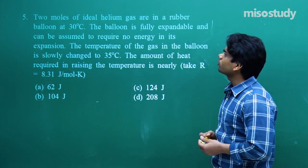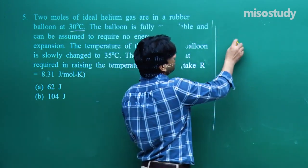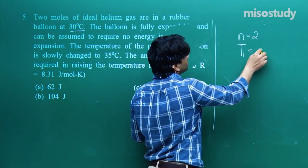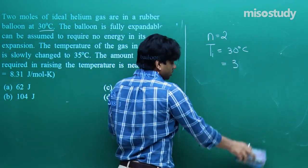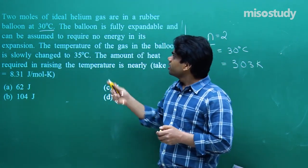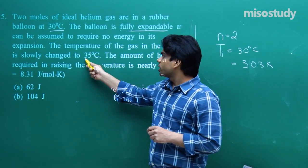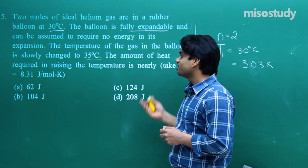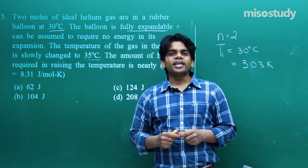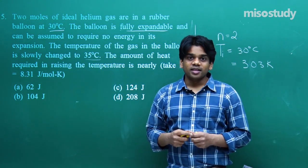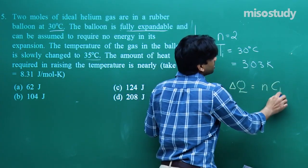Question number five: 2 moles of ideal helium gas are in a rubber balloon at 30°C (= 303 K). The balloon is fully expandable and requires no energy for expansion. The temperature is slowly changed to 35°C. Find the heat required. Since the balloon is freely expandable, pressure remains constant, so this is an isobaric process and we use ΔQ = NCP·ΔT.